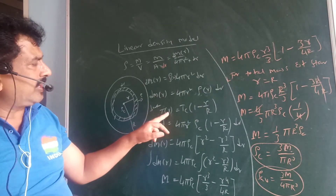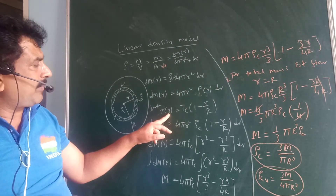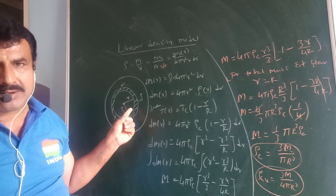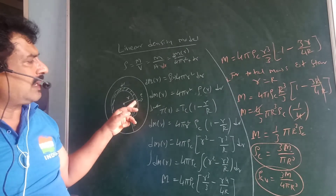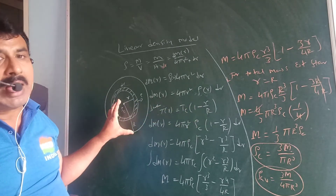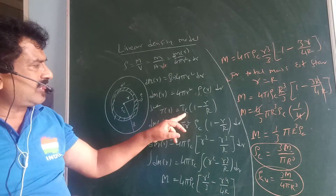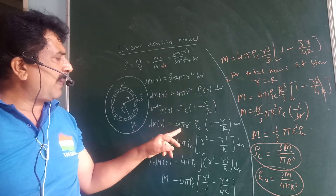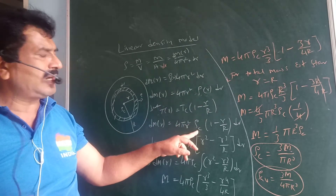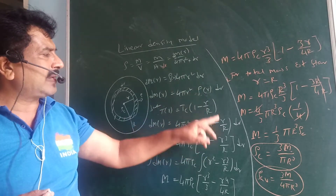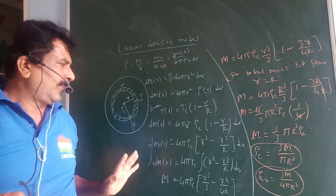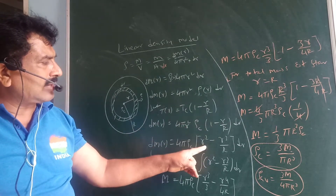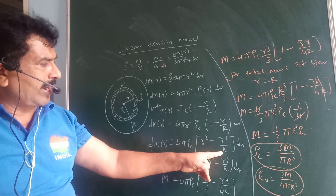We know the equation for temperature at distance r inside the star: T(r) = Tc × (1 − r/R), where Tc is the temperature at the core of the star, small r is the distance from the center to that layer, and capital R is the radius of the star. In terms of density, dm(r) = 4πr² × ρc × (1 − r/R) × dr.